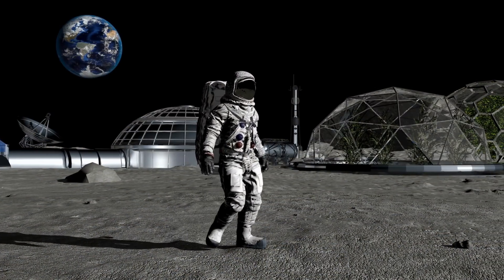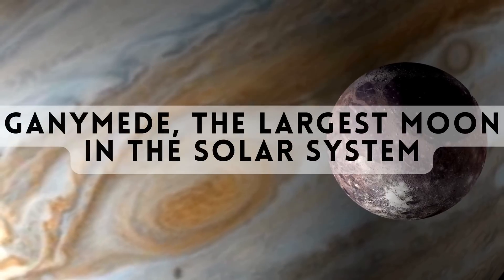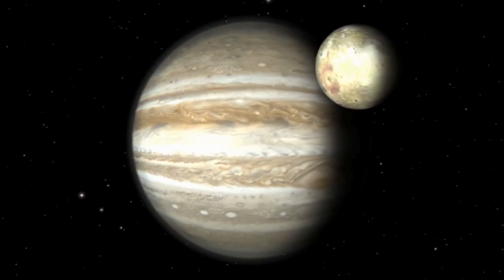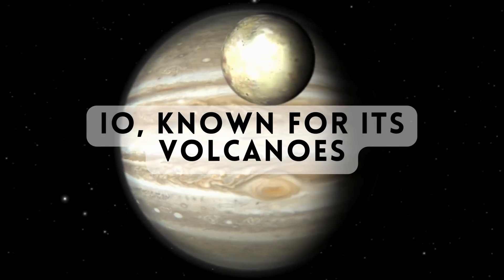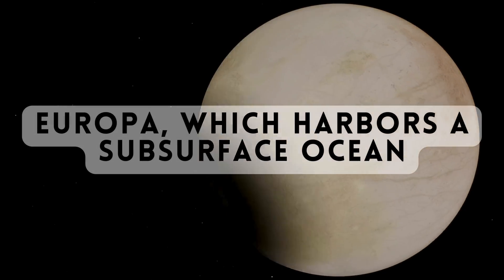Jupiter is a cosmic host to a diverse family of moons, with the most famous being Ganymede, the largest moon in the solar system. Other intriguing moons include Io, known for its volcanoes, and Europa, which harbors a subsurface ocean.